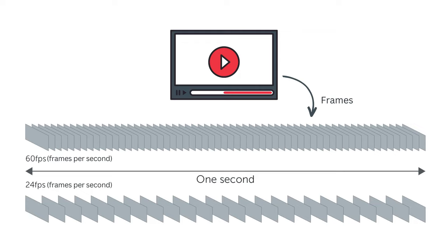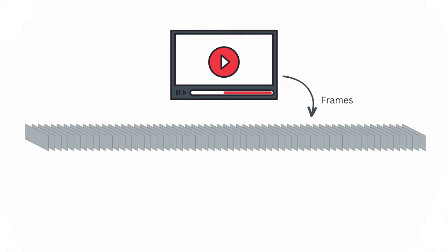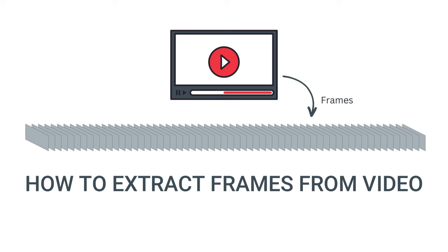Every video is made up of a succession of still images. Each individual image is called a frame, which is where you see the term frames per second, or FPS. Most videos are filmed at around 25 to 30 frames per second. In this video, I'll show you how to extract frames from a video and save them as high quality image files.